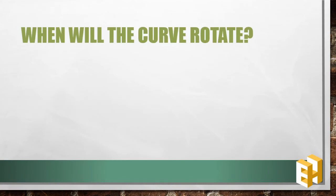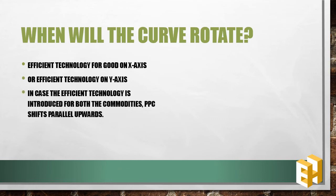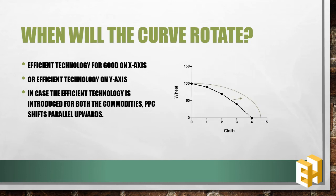A PPC curve can rotate as well. The reason is that if efficient technology is available for one good or the other. However, if efficient technology is introduced for both goods, then a shift in PPC would take place. Diagrammatically, if we say that efficient technology is introduced for cloth, keeping the point on the y-axis constant, the PPC would move further away.